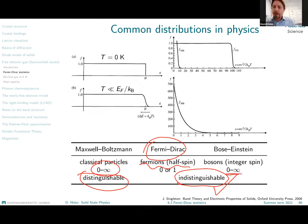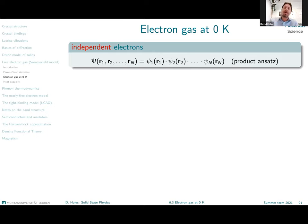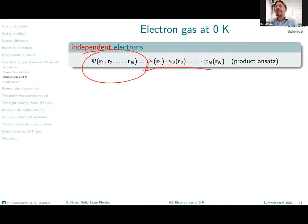Unlike fermions, bosons — particles with integer spin — are also quantum mechanical and indistinguishable, but I can have more than one of them in the same state at any time. This is something we will use in our phonon thermodynamics in the next lecture. Today we stay with Fermi-Dirac statistics, with fermions and electrons. It becomes inevitable for us to dig into quantum mechanics, dealing with the Schrödinger equation, wave functions, and the Hamiltonian.